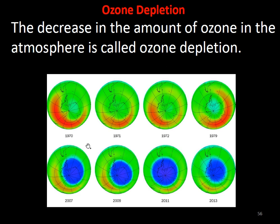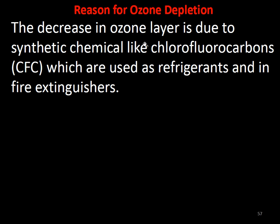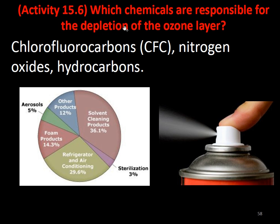How does ozone depletion take place? Comparing the 1970s to 2013, the ozone layer has decreased significantly. A decrease in the amount of ozone in the atmosphere is called ozone depletion. This is due to synthetic chemicals like chlorofluorocarbons (CFCs), which are used as refrigerants, in fire extinguishers, and in air conditioners. Chemicals responsible for depletion of the ozone layer include CFCs, nitrogen oxides, and hydrocarbons.